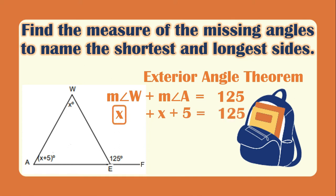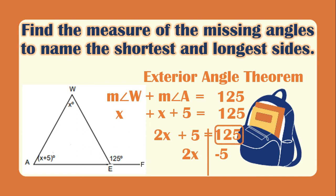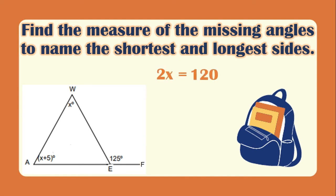Next, we combine like terms. X plus X gives 2X, and we copy the constant 5, so 2X plus 5 equals 125. We collect terms: 2X stays on the left, and 5 transposes to become negative 5 on the right. So 2X equals 125 minus 5, which is 120. Dividing both sides by 2, X equals 60.